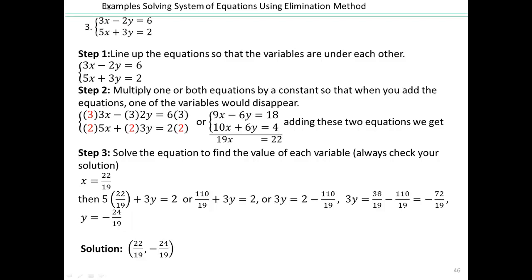It depends on the context and what equations you have to decide which method to use to solve a system of equations. To summarize the elimination method: line up the x's and y's; multiply one or both equations by a constant so that when you add them, one variable is eliminated — that's why it's called the elimination method. You're eliminating one variable to solve for the other, find the x value, then the y value. You can always go back and check that your solution satisfies both equations.